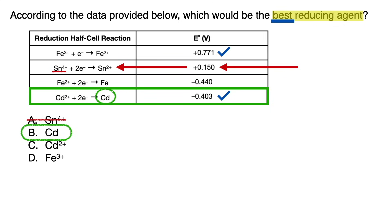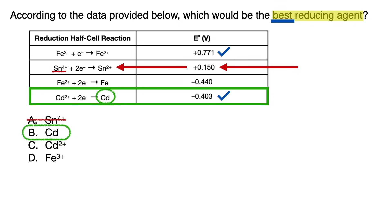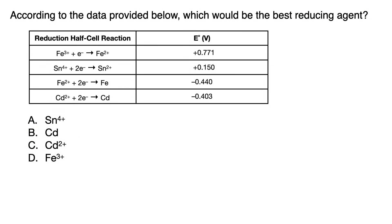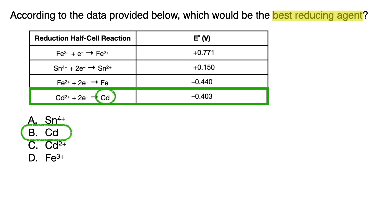And again, you don't even have to think about whether it's the ion or atom on the left or right of the half-cell reaction, or flip anything. Just choose the answer with the most negative or least positive ion or atom in the most negative or least positive E value cell. For best reducing agent, don't think too much — immediately go to the most negative or least positive E value cell and choose the most negative or least positive ion or atom.